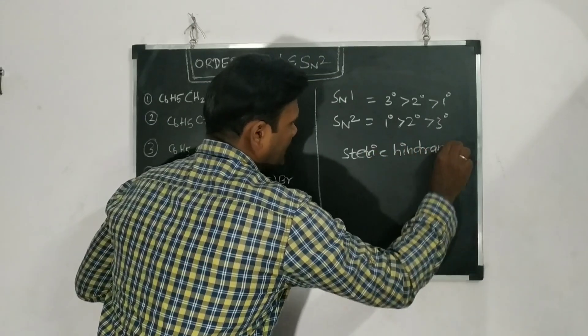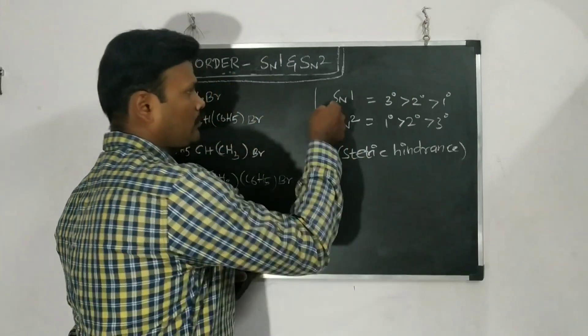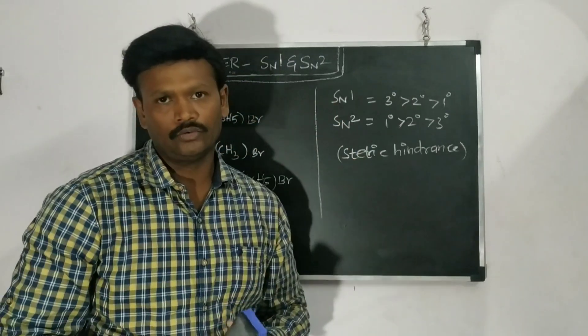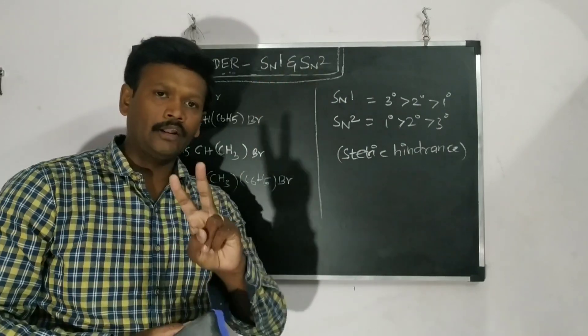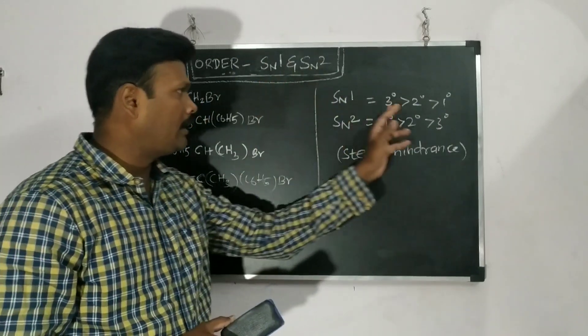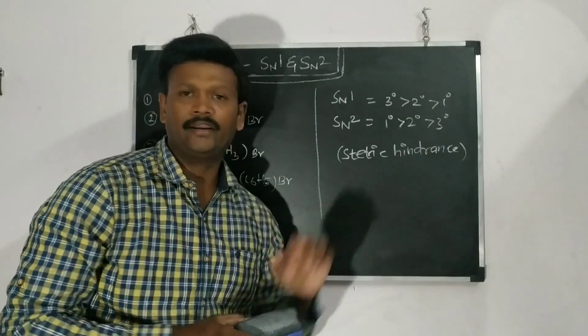What is steric hindrance? So that also affects, that also going to affect SN1 or SN2. So the prediction of faster in SN1 and SN2 will contribute two factors. One is degree, another one is steric hindrance.